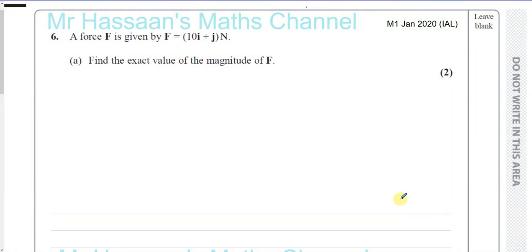Okay, welcome back. Question number 6 from the Mechanics 1, January 2020, International A-Level paper. A force F is given by F equals 10i plus j Newtons. Find the exact value of the magnitude of F.